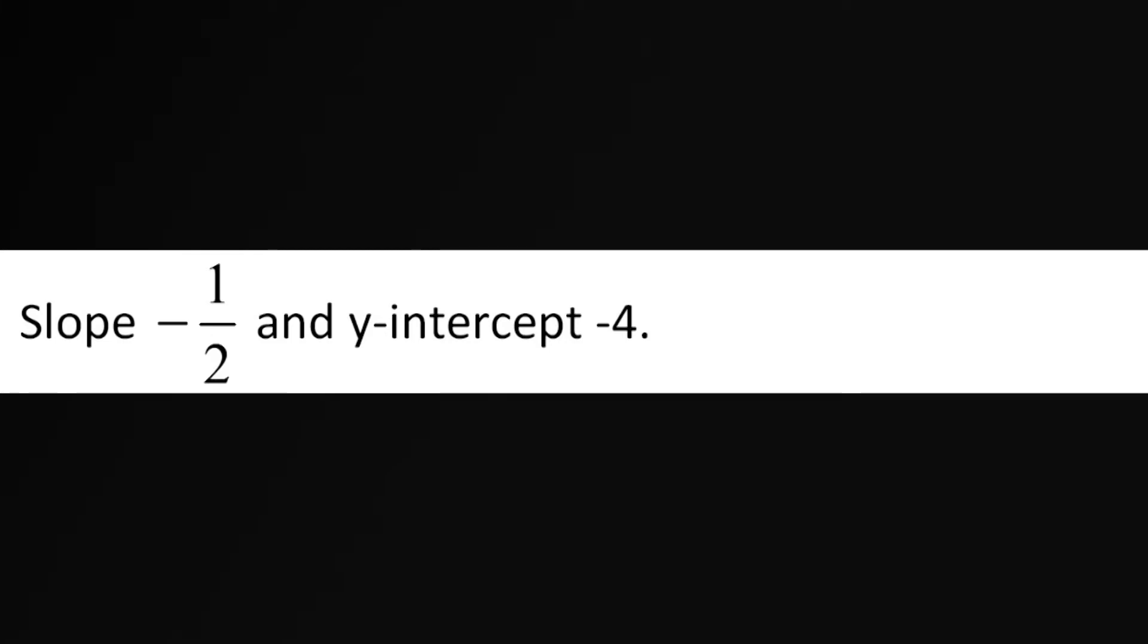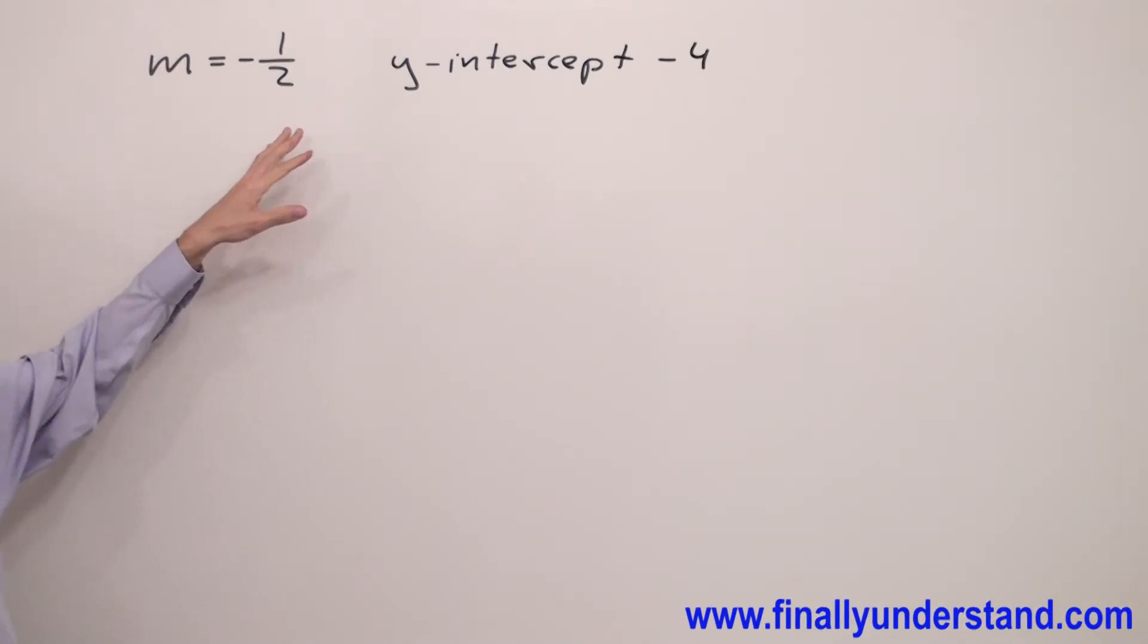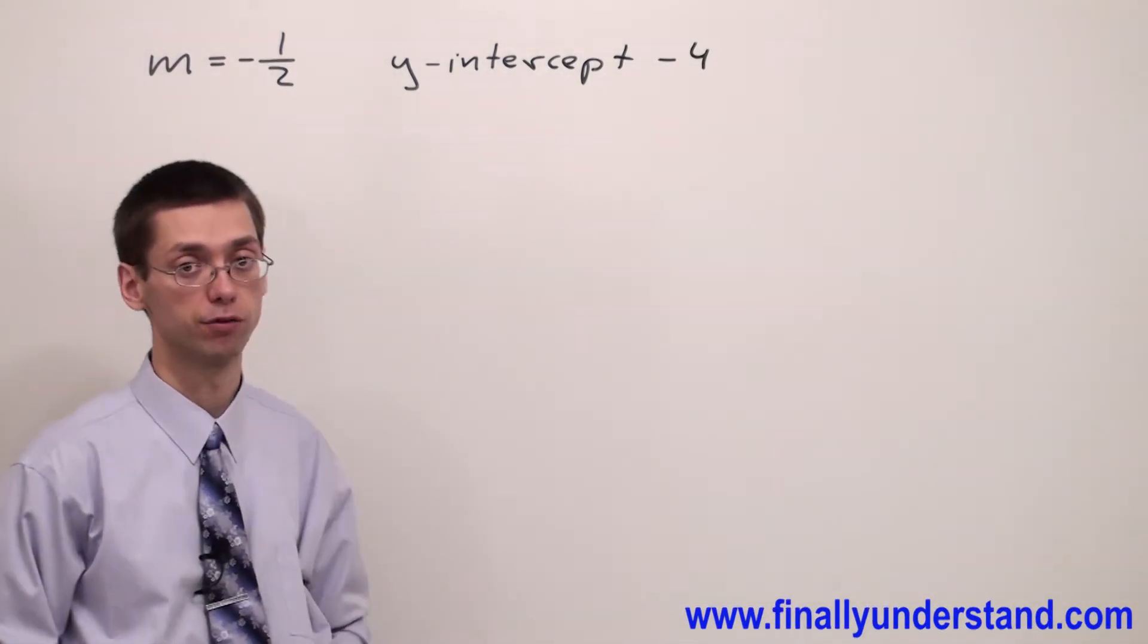Let's take a look at this example. This time we have given slope equals negative one half and y-intercept equals negative four.